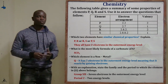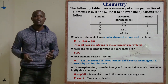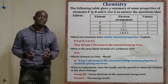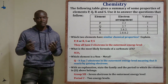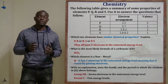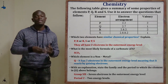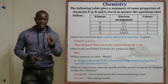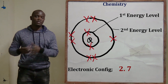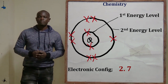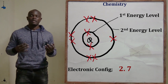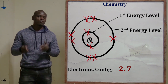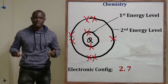Now for Roman numeral two of the same question, which asks us to state the family and the period to which element Q belongs, with explanation. Element Q has a configuration of 2,7. The last value in the configuration tells us the group number — the last value is 7, so element Q belongs to group number 7.